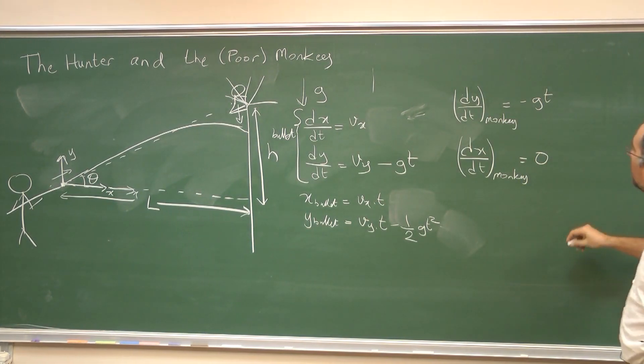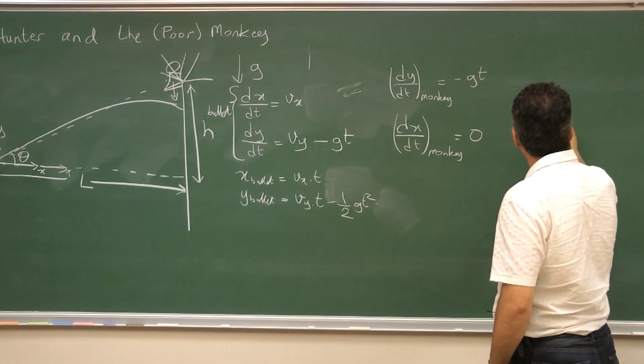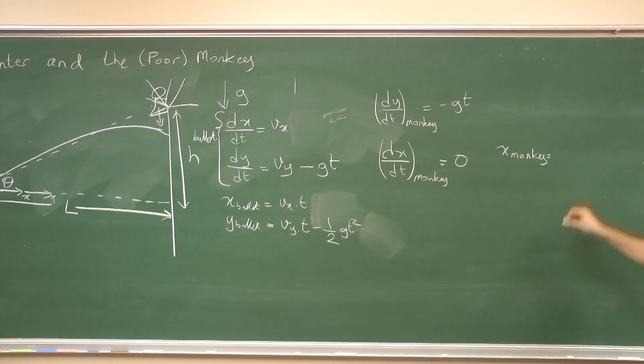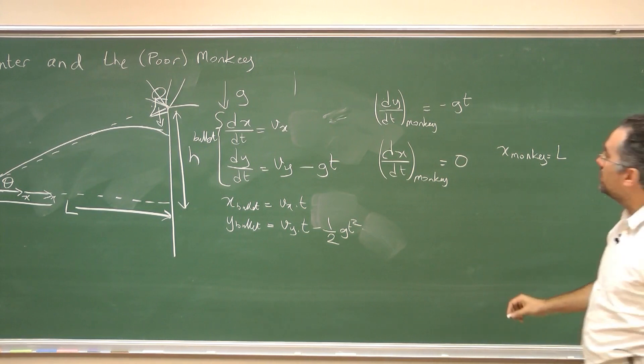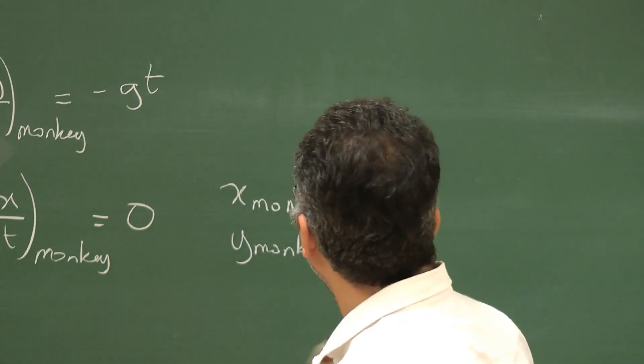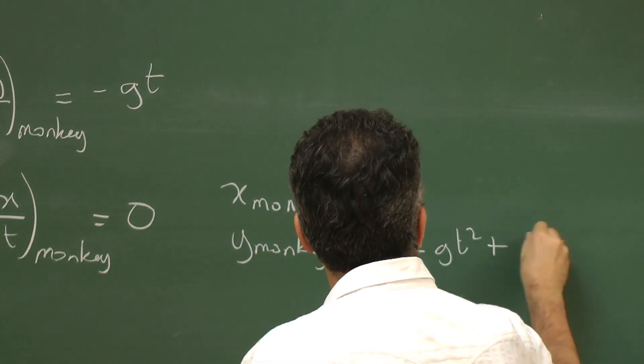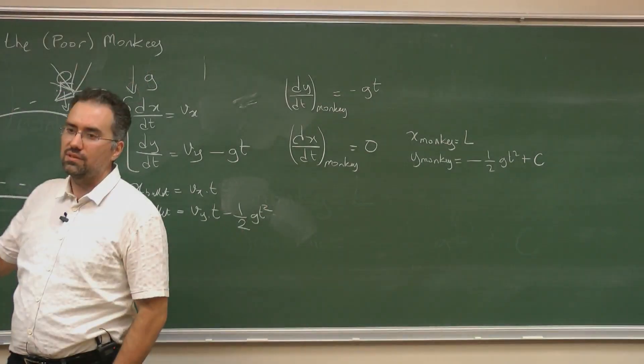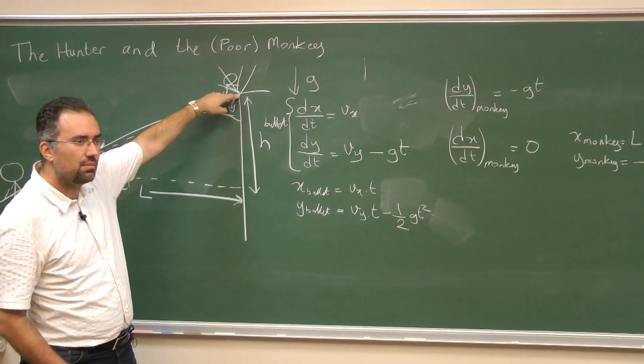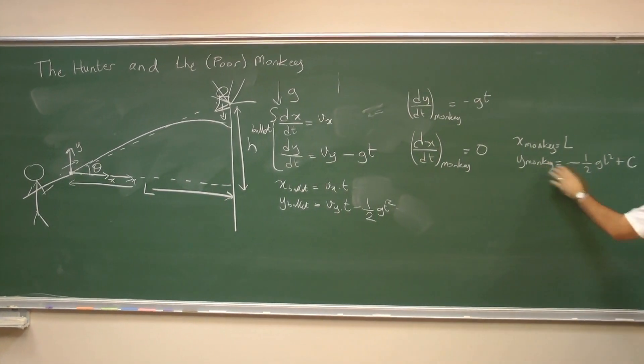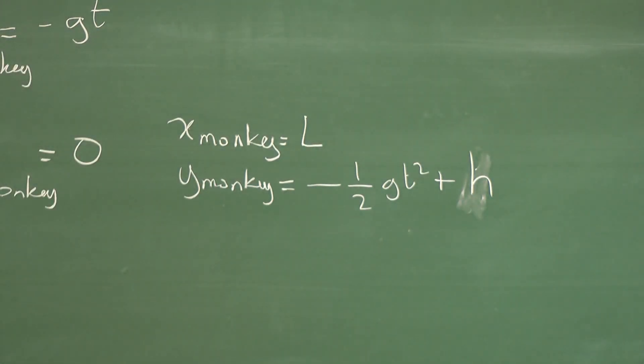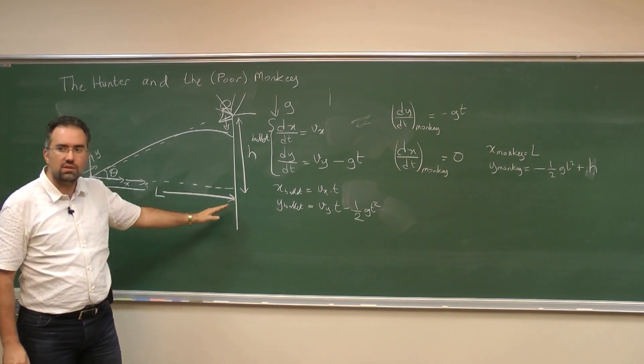So how about the monkey? Now the x position of the monkey is just constant and it's L at the beginning so it's always going to be L. And the y position of the monkey is going to be what? One half gt squared plus a constant. Now this constant is not 0 because initially the monkey was high up in the tree. It was at a height h. So at t equals 0, so y must be h. So this c is h.